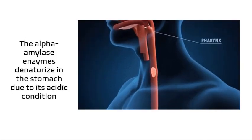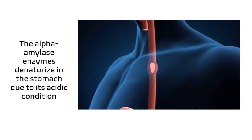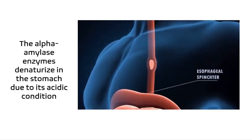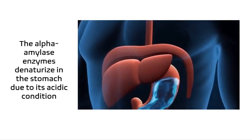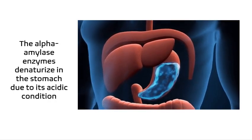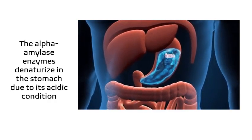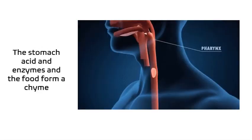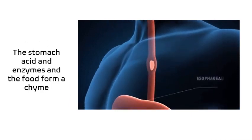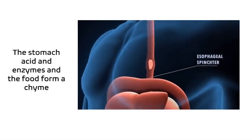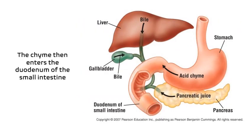Remember that amylase enzymes are also made of protein. That is why alpha-amylase denatures in the stomach due to its acidic condition. The stomach acid and enzymes, together with the food, form what we call chyme. The chyme then continues to enter into the small intestine through what we call the duodenum.